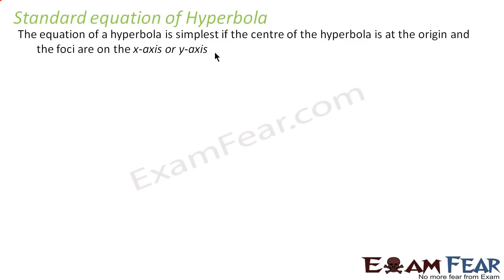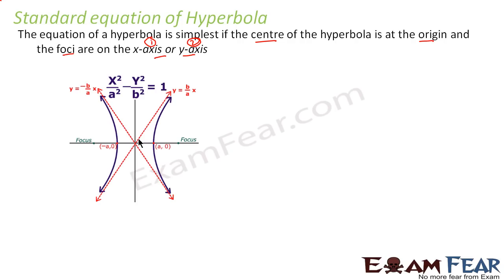The standard equations of a hyperbola are simplest when the center is at the origin and the foci are on the x-axis or y-axis. In case one, when the foci are on the x-axis, the equation is x²/a² − y²/b² = 1. The distance from center to vertex along the x-axis is a.